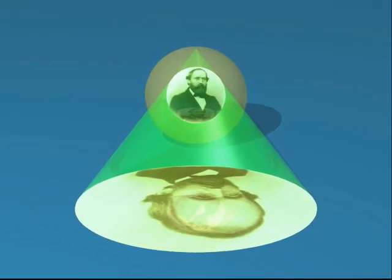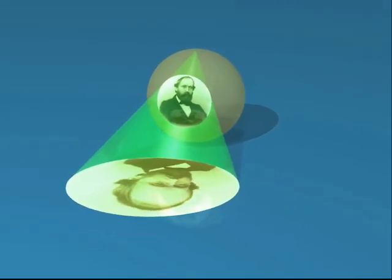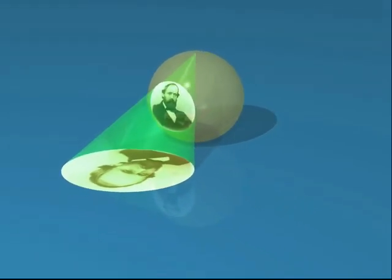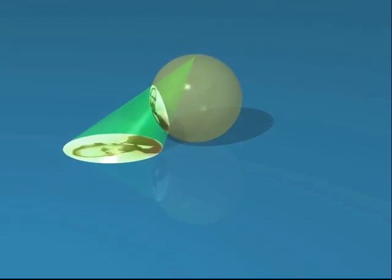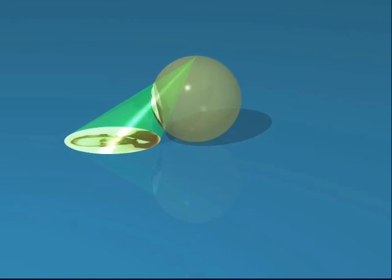We have seen that the stereographic projection sends circles on the sphere, not going through the pole, to circles in the plane. And now, we are going to prove it.